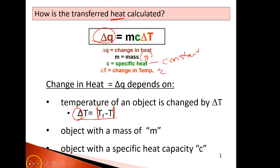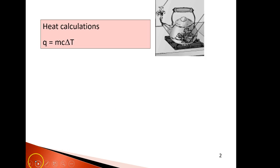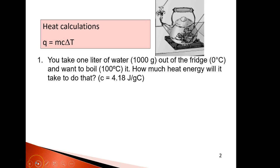The equation has a mass M and a specific heat capacity — they use the symbol C. So, you want to take a liter of water out of the fridge at zero degrees Celsius, and you want to boil it at 100 degrees.